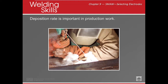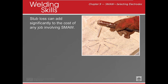Deposition rate is also important when selecting the correct rod — how fast do we need to deposit filler metal? A 7024 is a high deposition rod, also called a jet rod. The payoff is that because it's so fluid and fast, you can only use it in flat position and horizontal fillet only.